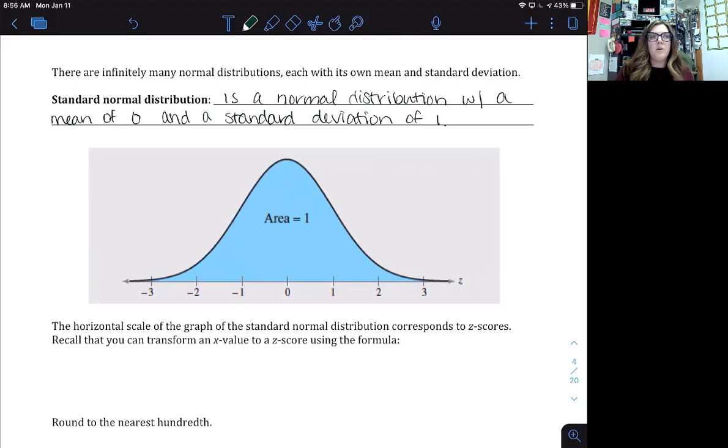The reason why we switch to the standard normal distribution is because it allows us to compare different data sets. So think back when we were looking at z scores and comparing two different sets of data. We can find the z score of both of the data values to compare which one is greater.